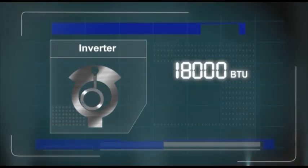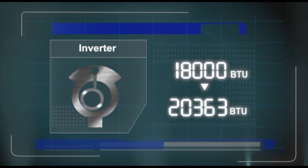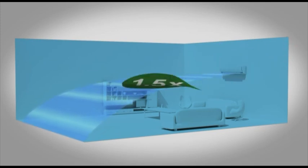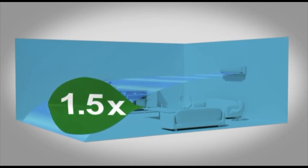As a result, with inverter technology, a 22,000 BTU performance can be achieved with an 18,000 BTU unit. Inverter air conditioners can cool down a room 1.5 times faster than conventional ones.